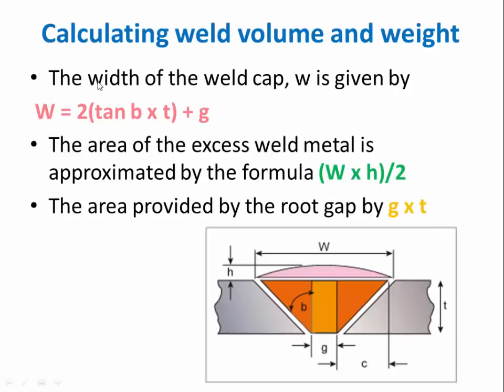To find the width of the weld cap, we use this formula: W = 2(tan B × T) + G. We have to add the gap. To find the area, the excess weld metal is approximated by the formula (W × H) divided by 2. H means this height of the gap cap.